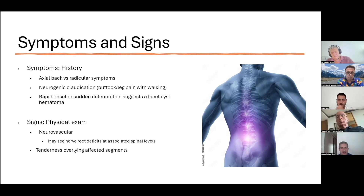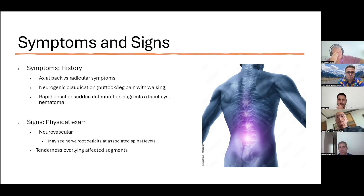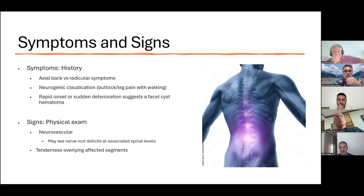It's also suggested that with rapid onset or sudden deterioration, there could be a hematoma formed within the facet due to blood filling up within that facet joint, creating a cyst rather quickly. On physical examination, you're going to see some nerve root deficits potentially at an associated spinal level and tenderness overlying the affected segments.